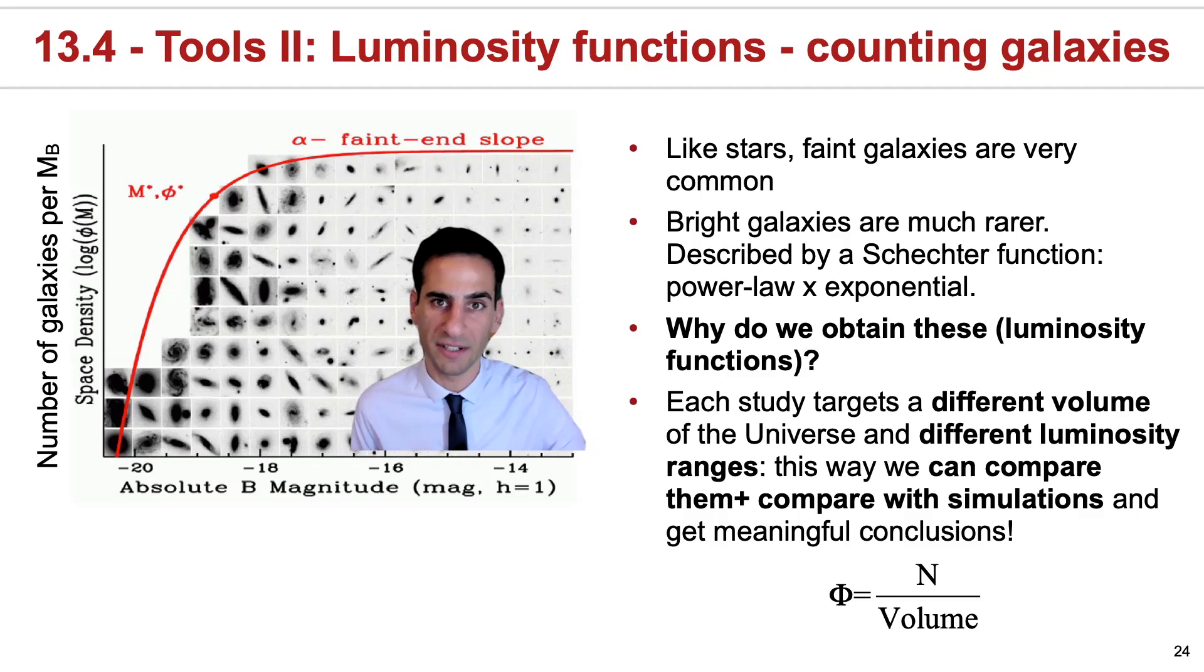In section 9 we had a look at the luminosity function for stars. We've seen that stars pretty much like the sun were very common, stars which are fainter than the sun are even more common, and that stars which are very bright are very rare.